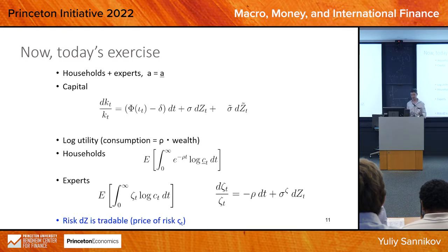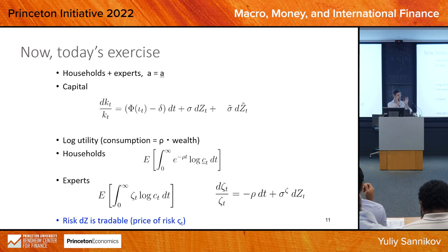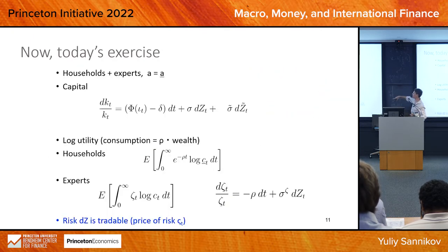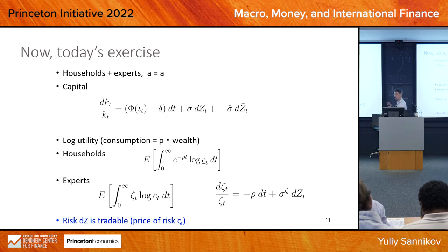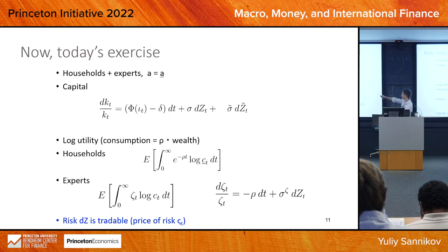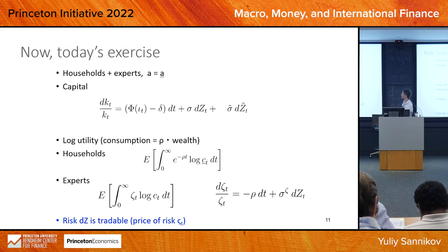Now it's your turn to solve another model — model number two, a sister of the model we just solved. It has some new interesting elements and also extra assumptions that will make it simpler. Consider an economy with households and experts. Unlike before, in this version they are equally productive — they get the same output from capital. Capital has both aggregate risk and idiosyncratic risk.